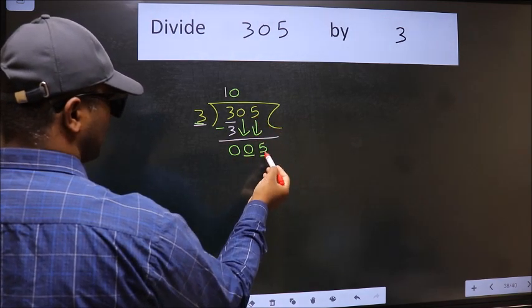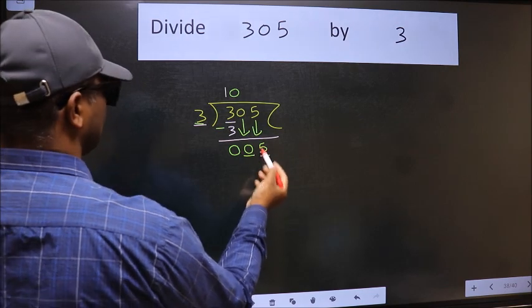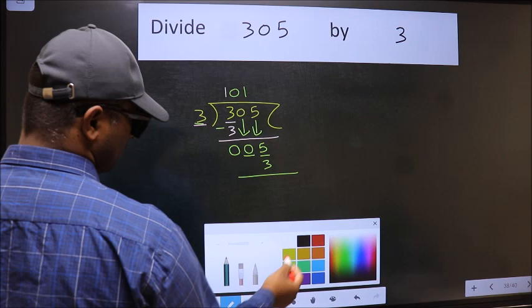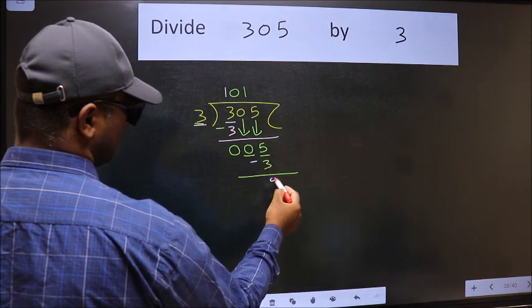Now 5. A number close to 5 in 3 table is 3 1s 3. Now we should subtract. We get 2.